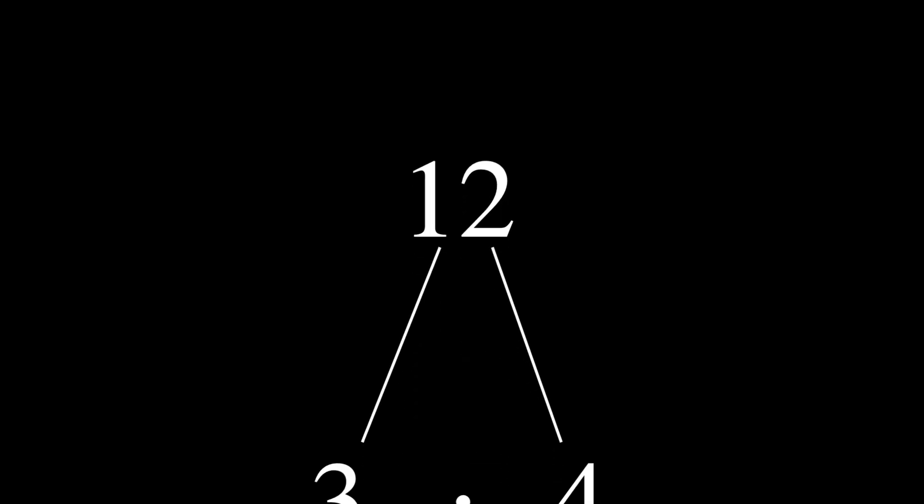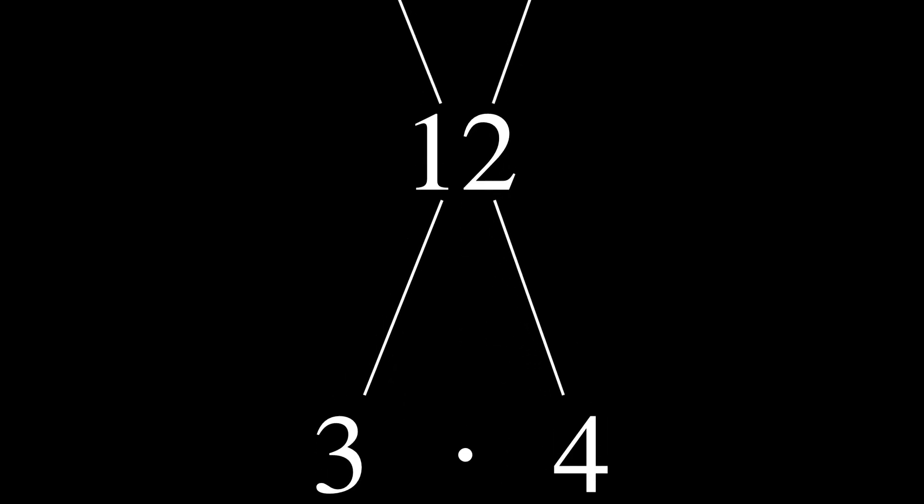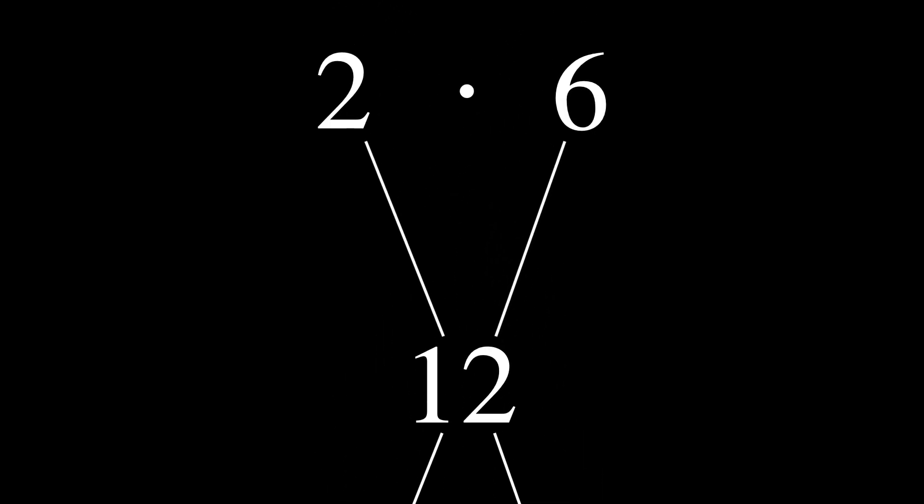Take the number 12. 12 can be written as a product of other smaller numbers. A number like 12 is known as a composite number. Other examples are 4, 6, 8, 9, and so on.